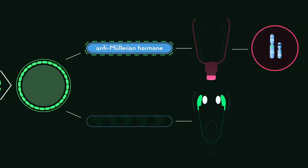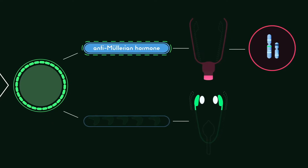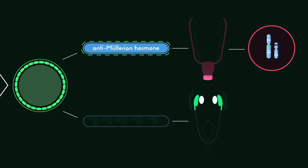Thus, newborns with CAIS are observed at birth as females, raised as females, and identify as females throughout life.